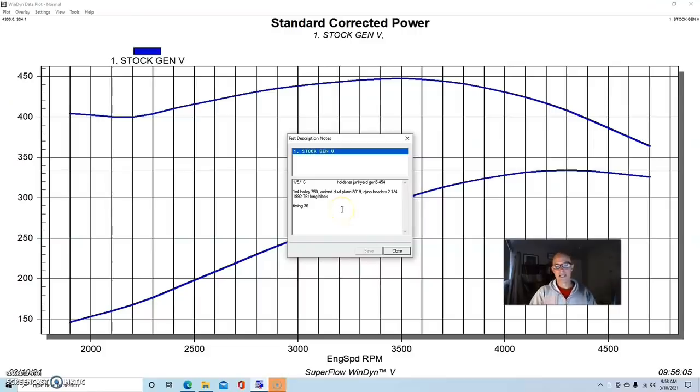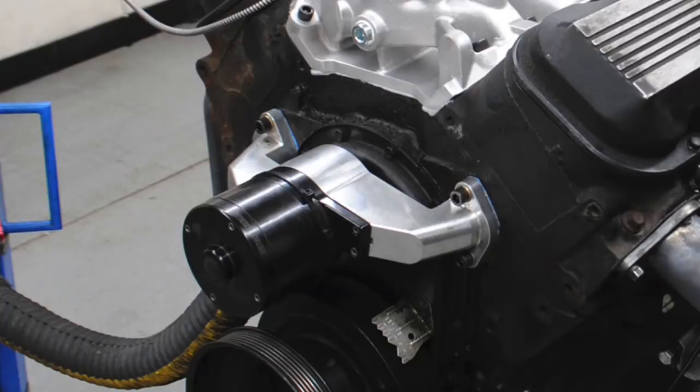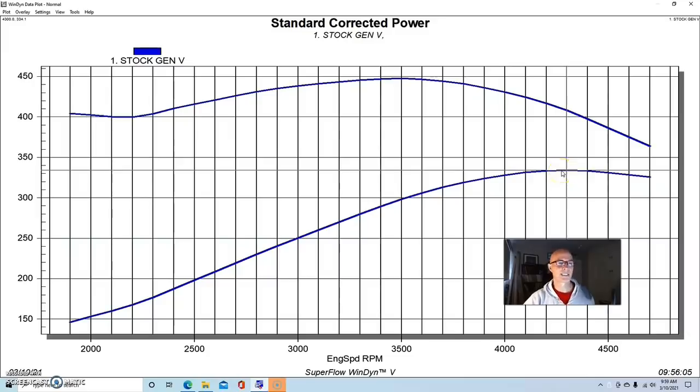We installed a Weiand dual plane intake manifold, the 8019, and a Holley 750. We put our dyno headers on. This particular one was a 1992 with throttle body injection. We took the fuel injection off, put carburetion on. Otherwise it was run stock with headers and the carbureted induction system.